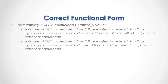What we are testing is the Ramsey Reset gamma coefficients' F-statistic p-value. If the Ramsey Reset gamma coefficients' F-statistic p-value is less than the alpha level of statistical significance, then the regression had incorrect functional form with 1 minus alpha level of statistical confidence. On the other hand, if the p-value is greater than alpha, then the regression had correct functional form with 1 minus alpha level of statistical confidence.